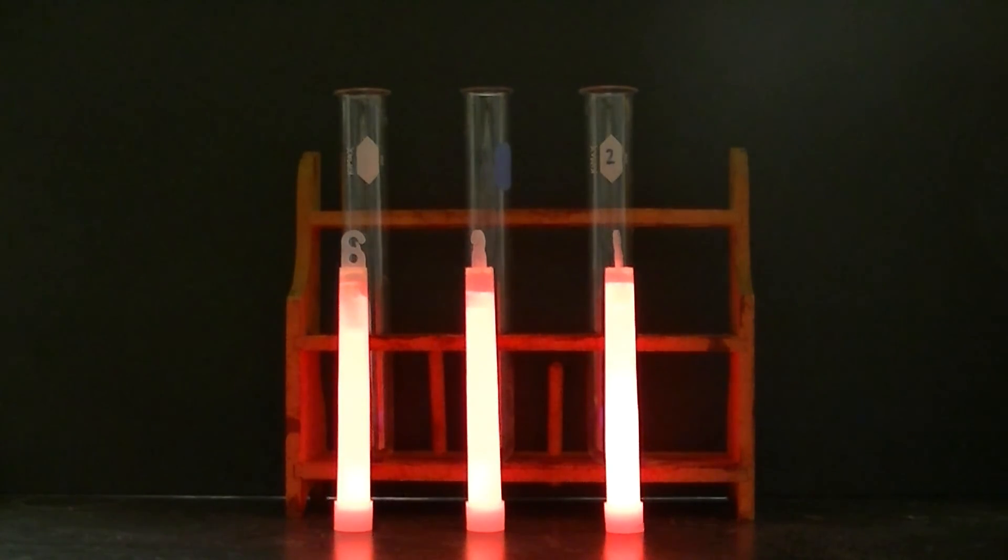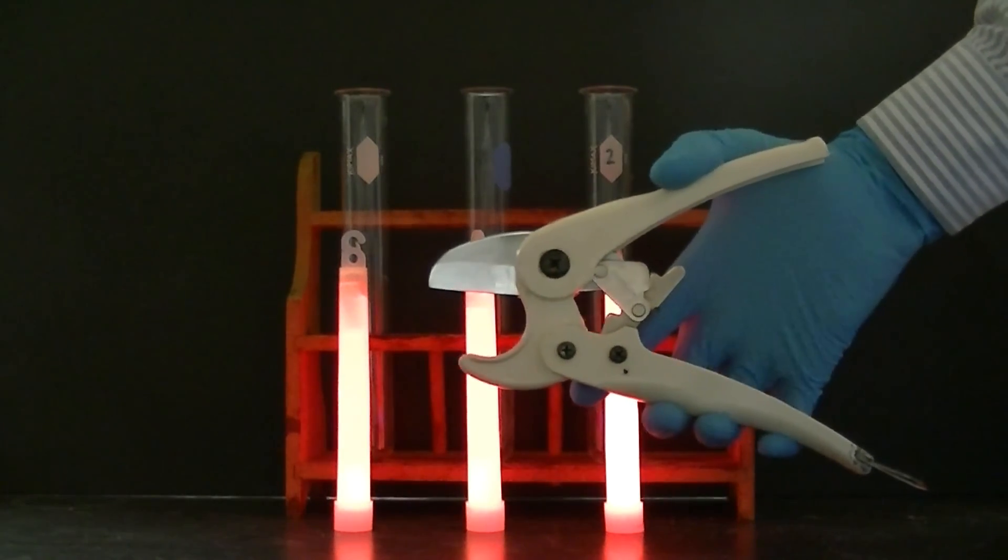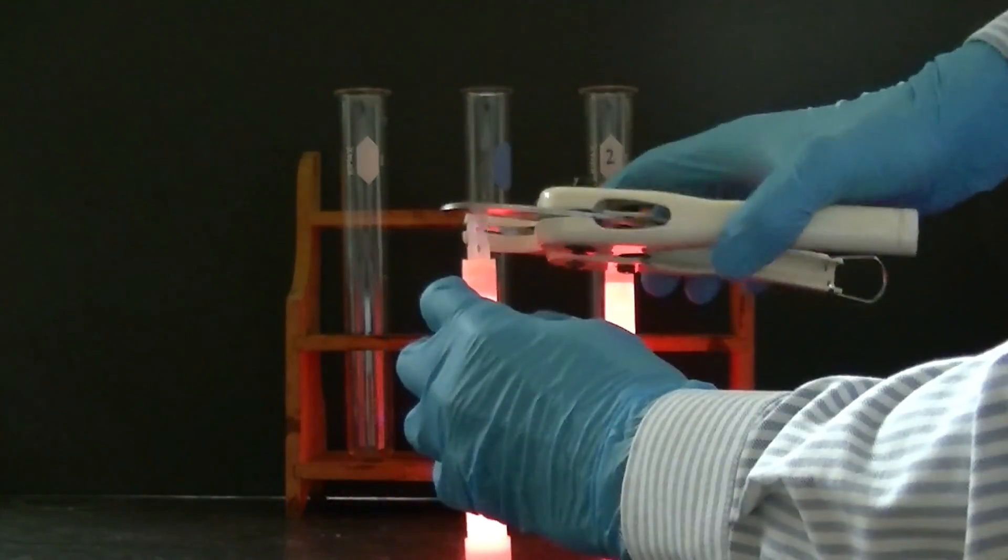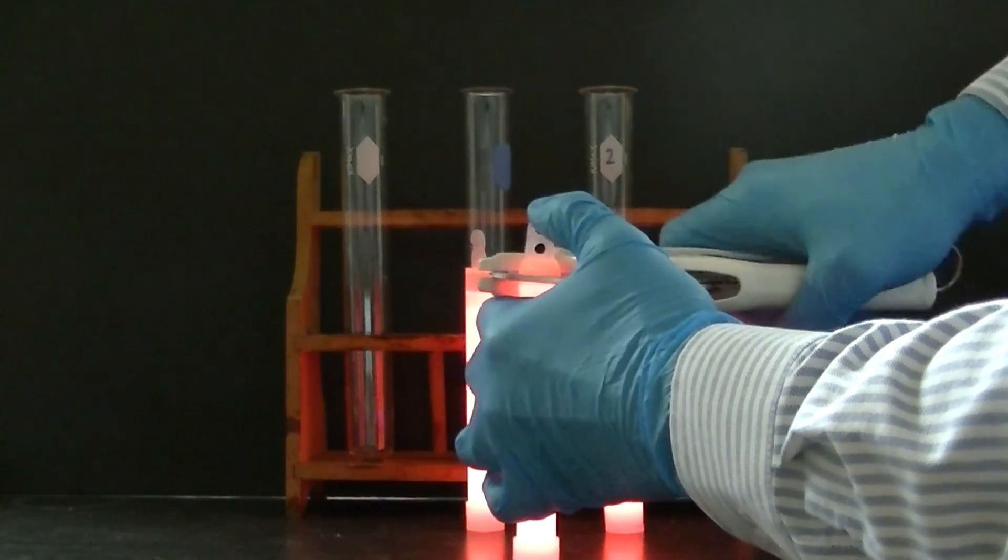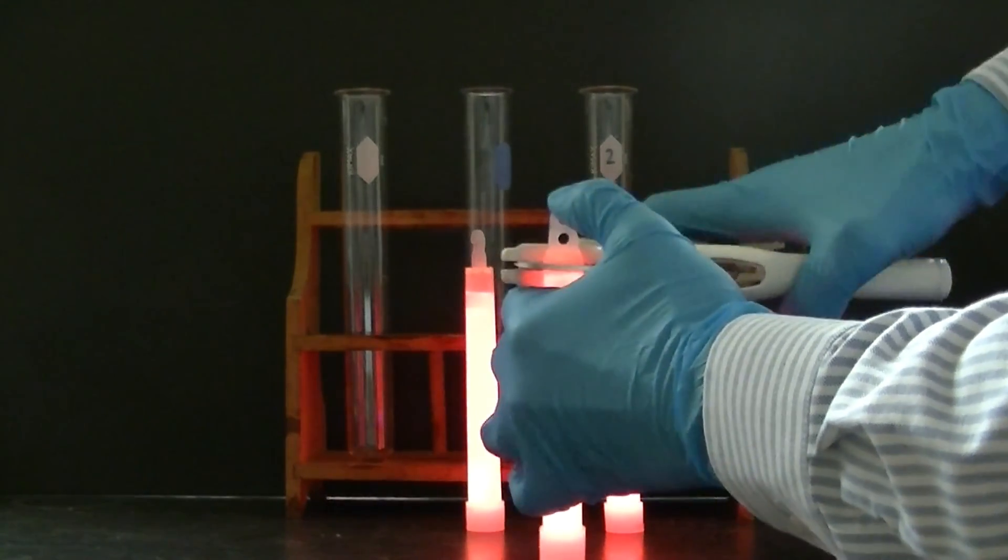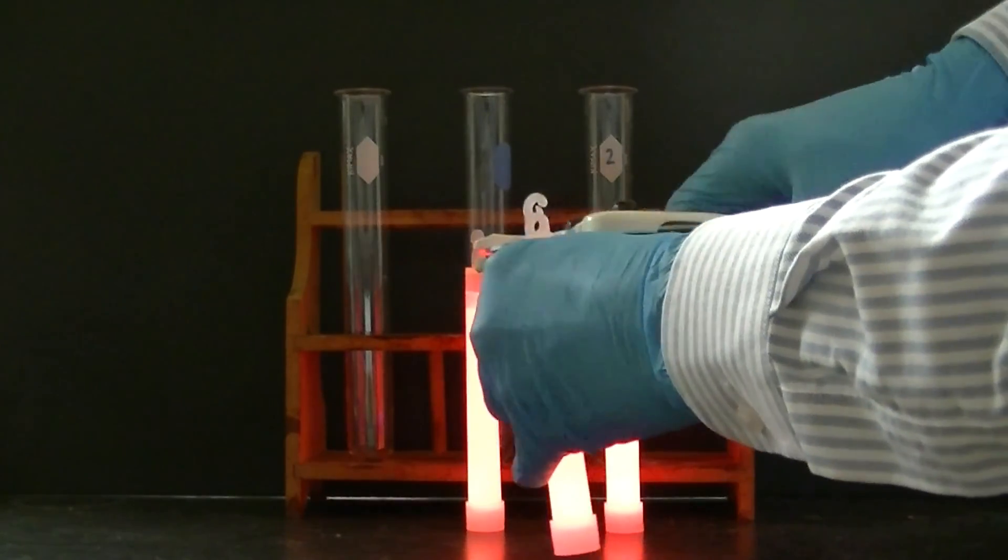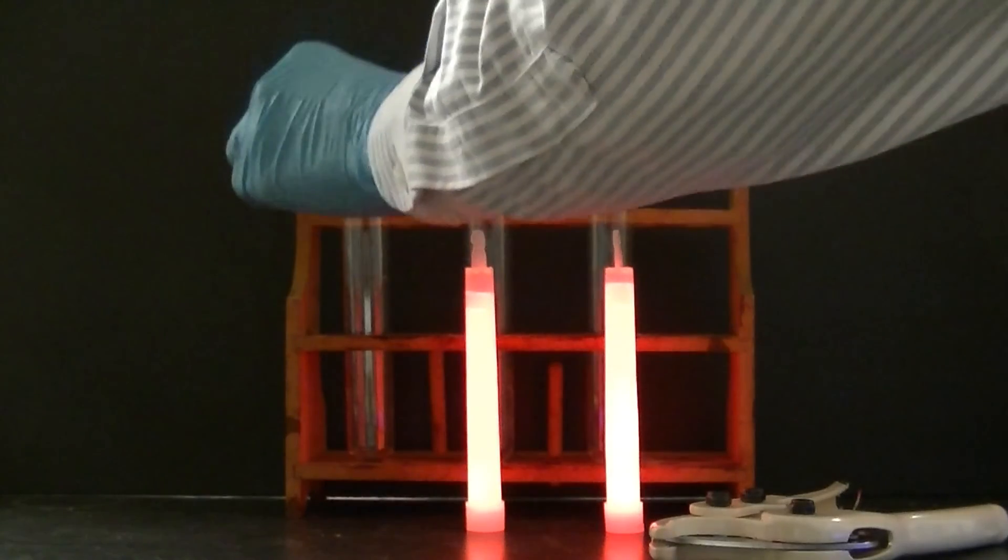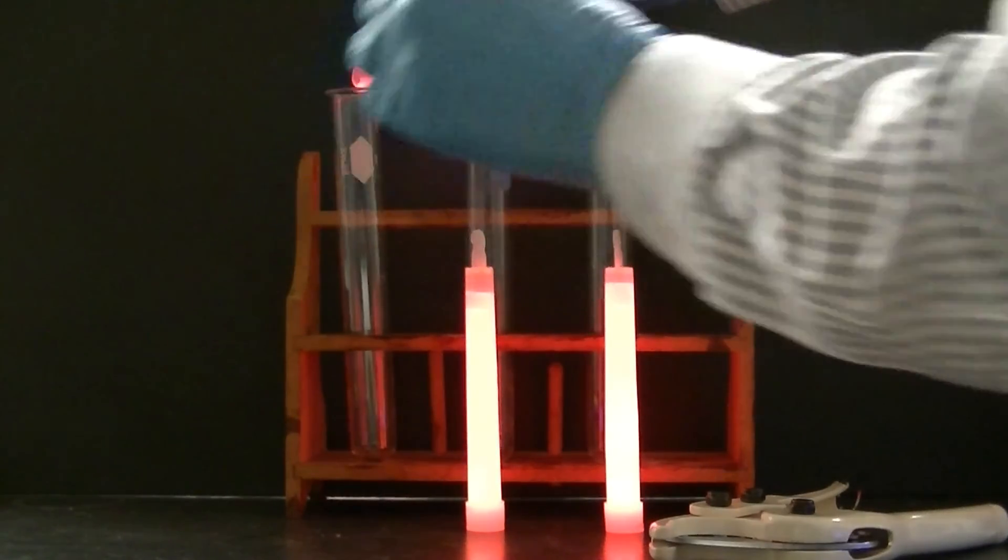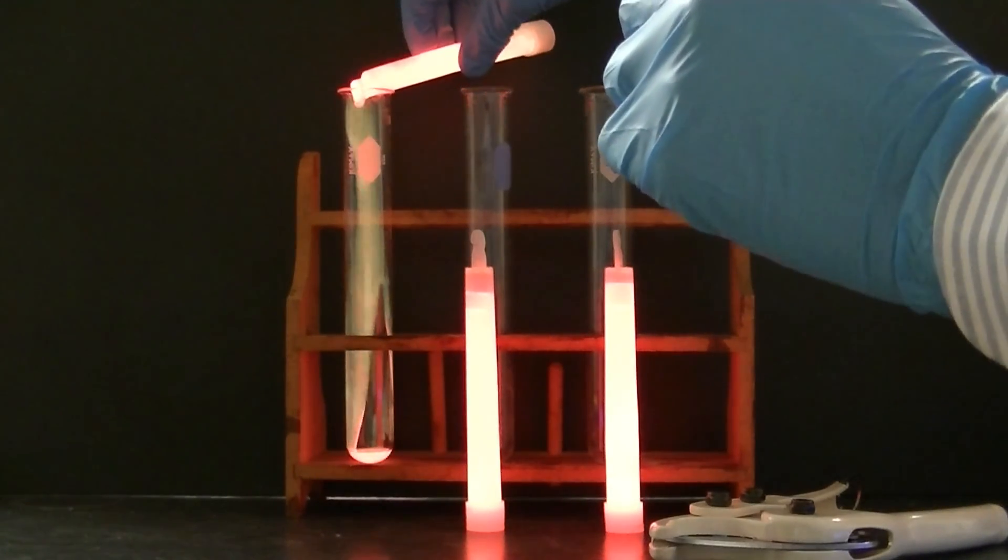To do so, I'm going to take a pair of PVC pipe cutters and open up each of my light sticks, and then I'm going to pour the contents of each light stick into three separate test tubes. You can use scissors to do this, but I find that using PVC pipe cutters works a lot better.